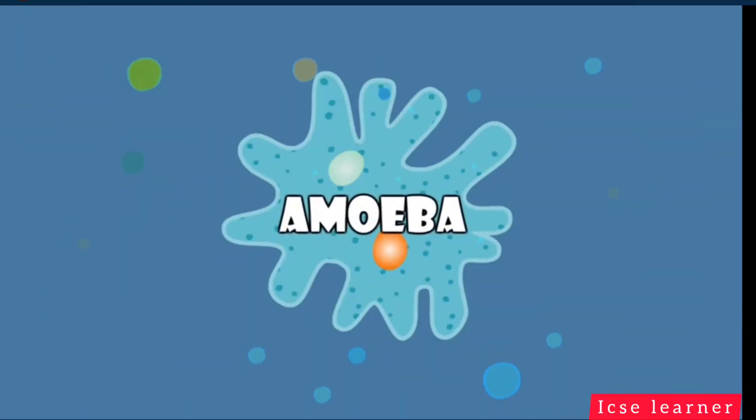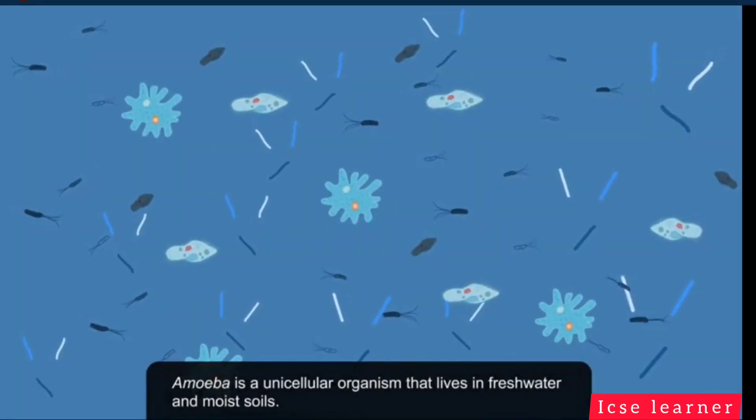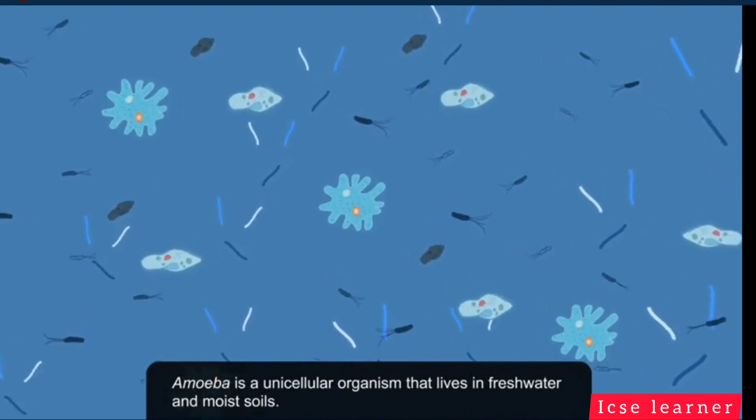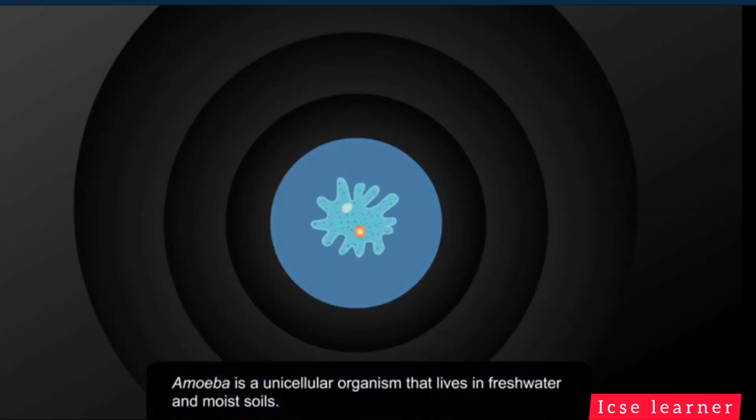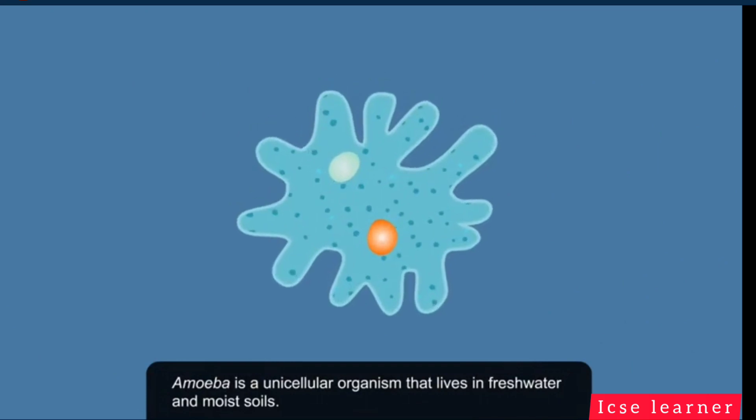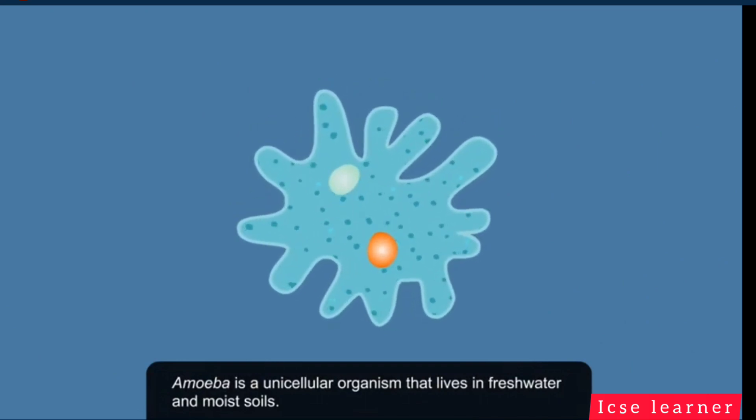Amoeba. Amoeba is a unicellular organism that lives in fresh water and moist soils. Let us learn more about this organism.